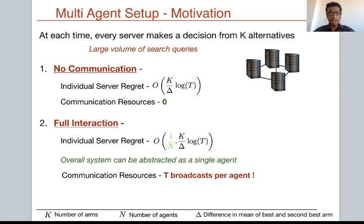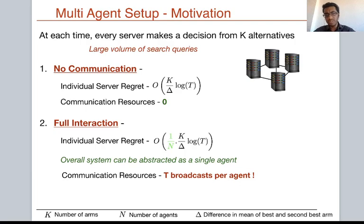On the complete other extreme is full interaction. Under this setup, after each time a server makes a decision and observes feedback, it broadcasts that information to all other servers in the network. Therefore, every server can potentially learn from all past experiences of all servers. One can show that under full interaction the entire system proceeds as a single virtual agent playing the MAB problem, and that virtual agent incurs a regret of order K/δ · log T. With N total servers, the per-agent regret then scales as order (1/N) · K/δ · log T, a dramatic reduction. However, in order to achieve this reduction, the communication resources used are huge—each server broadcasts a message for every decision, which at the scale of modern systems could be impractical.